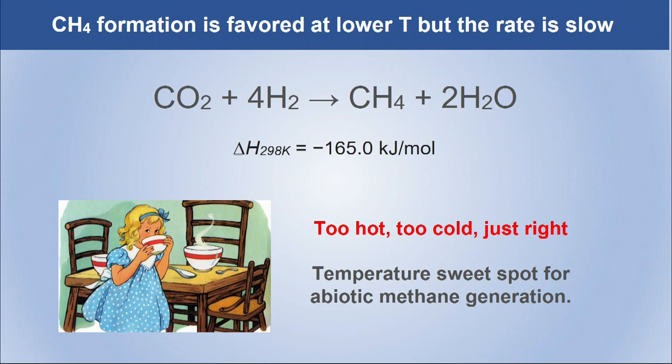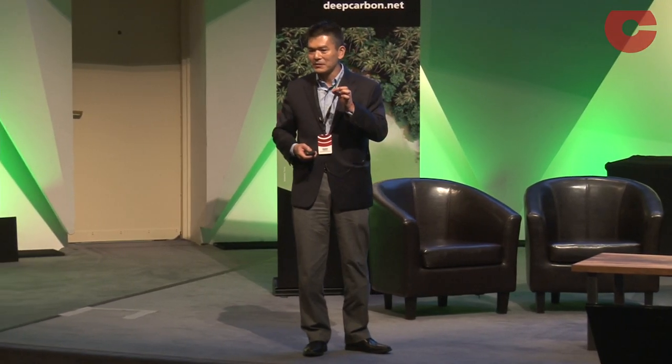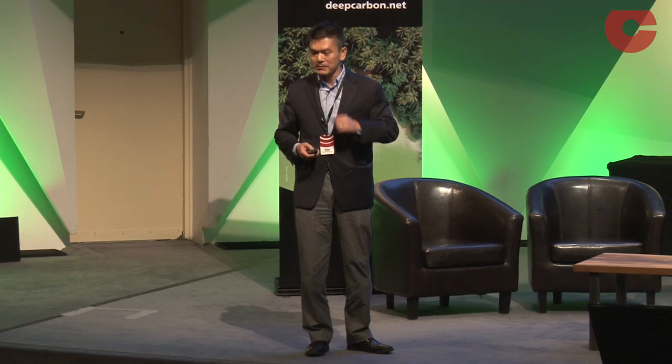At lower temperature the rate is very, very slow. This is a Goldilocks principle for geochemistry: if temperature is too hot, there's no thermodynamic drive to make methane; if temperature is too low, the rate is very slow. So temperature has to be just right to make methane.